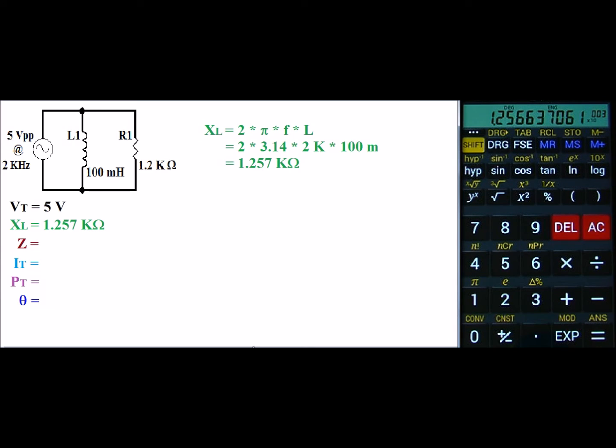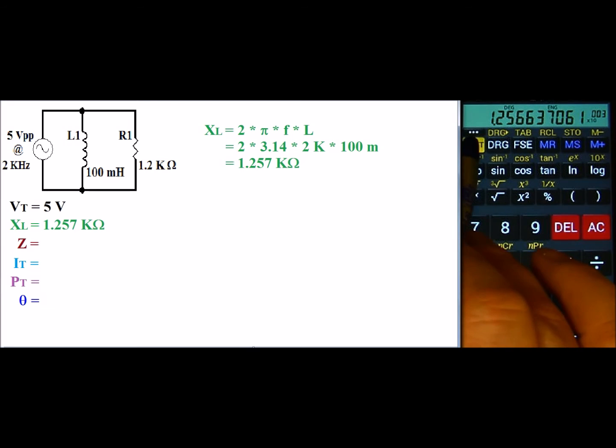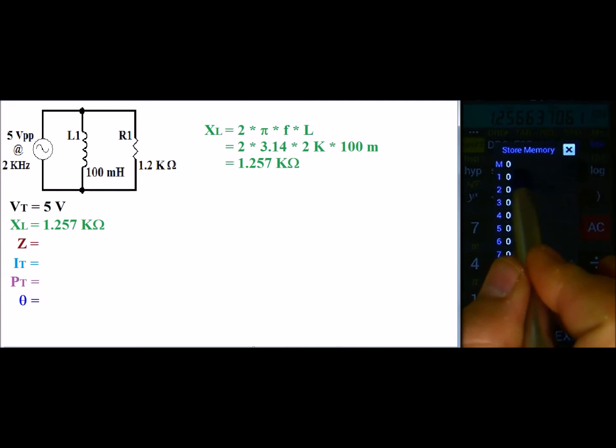Now normally our next step would be to find our impedance total. If this was two resistors, we could use the product over sum formula. The problem is that inductive reactance and resistance cannot just be added together, so it really makes that formula complicated. So what we're going to do is use Kirchhoff's law to find Z total. We're going to go ahead next and look at our individual values and then find I total from there. Let's go ahead and store the value for inductive reactance.